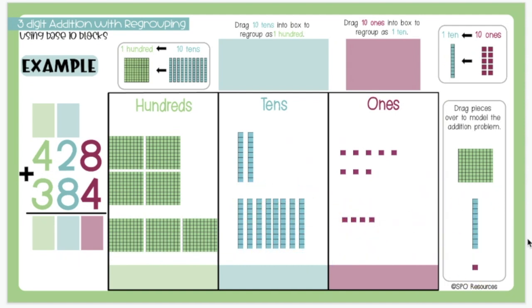Now that I have all of my base 10 blocks on my working mat, I will start in the ones place and add the ones. I have 1, 2, 3, 4, 5, 6, 7, 8, 9, 10, 11, 12. I have 12 ones.